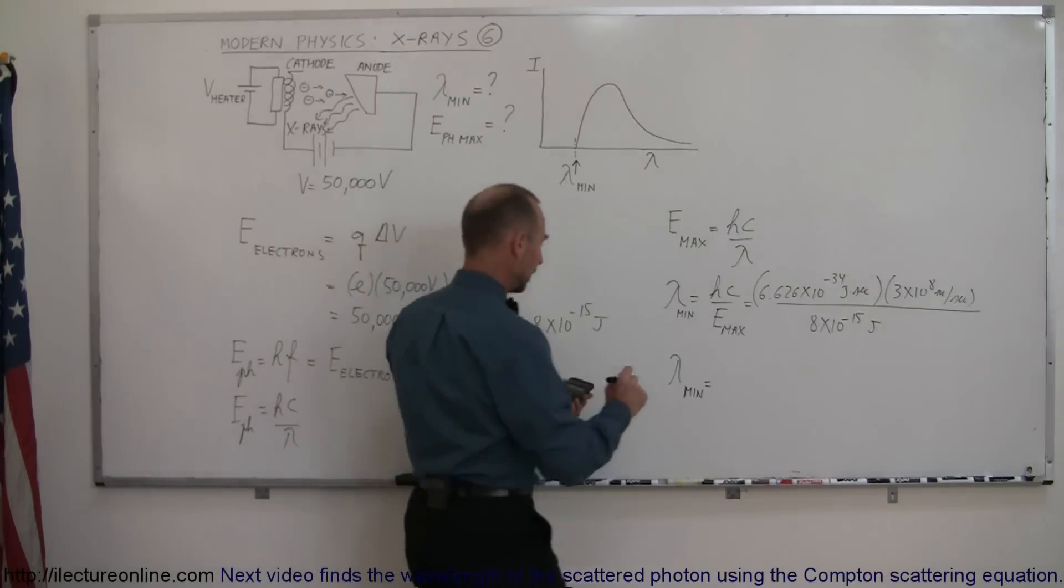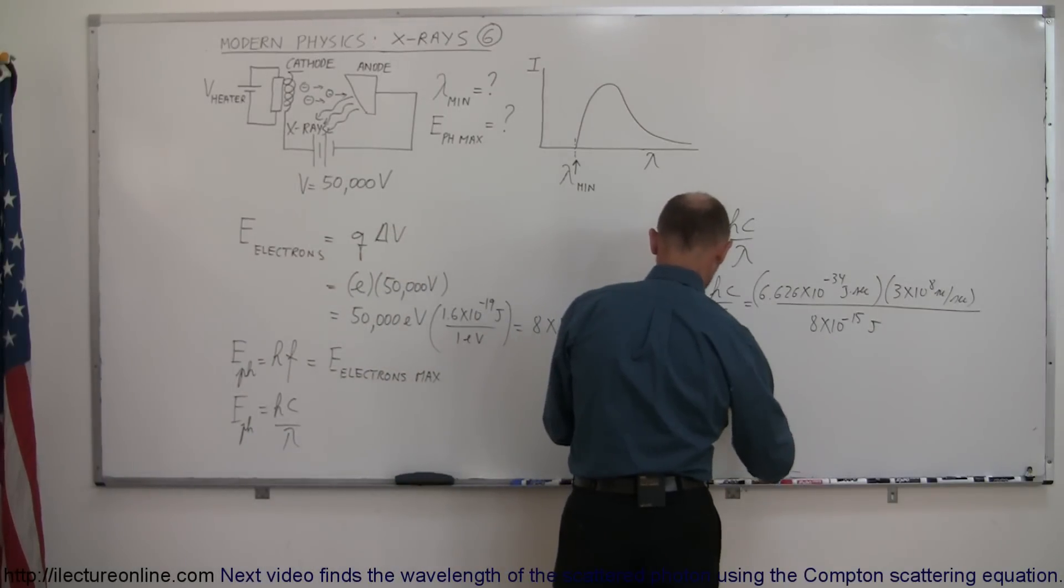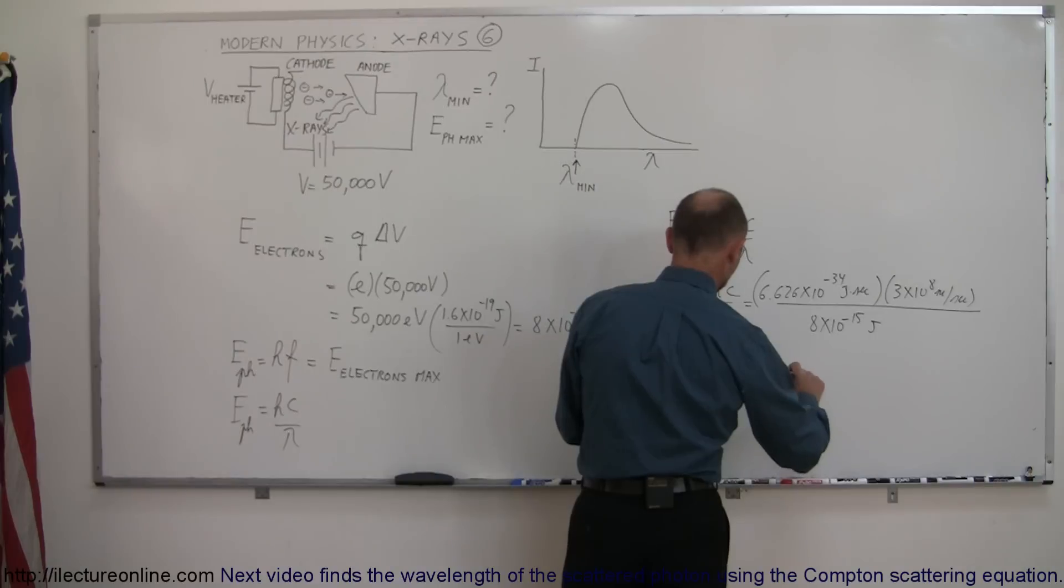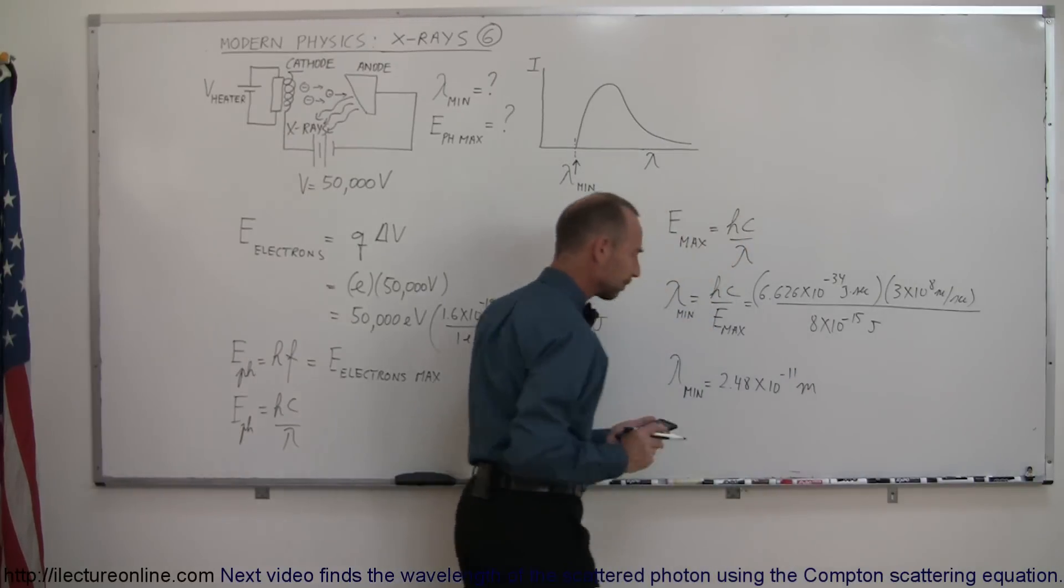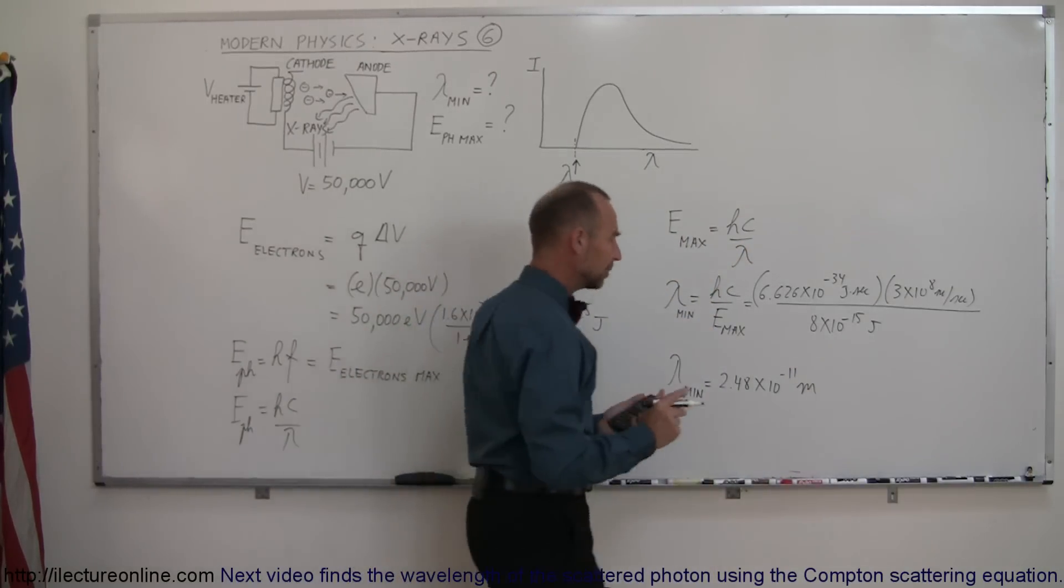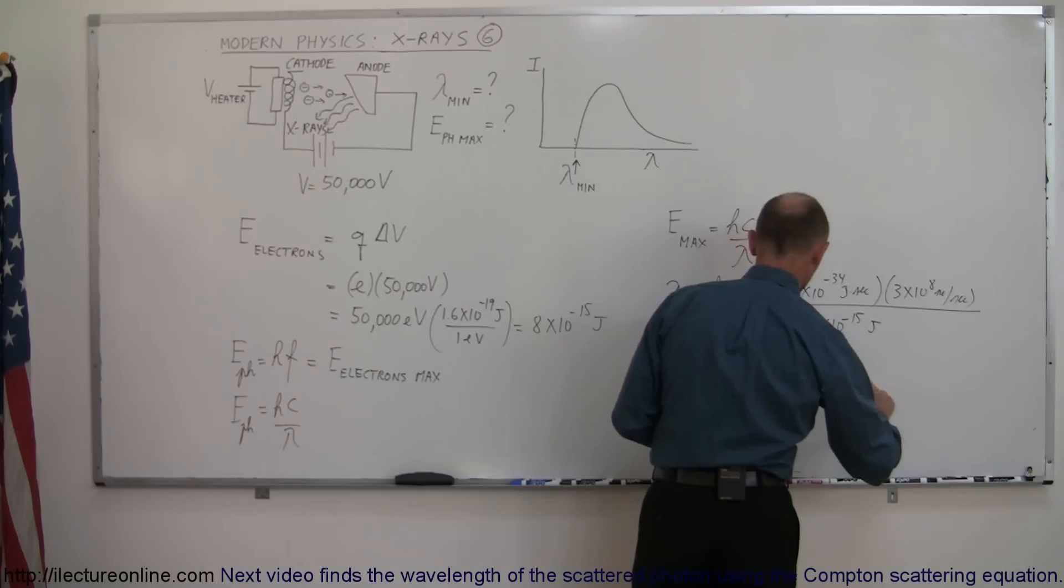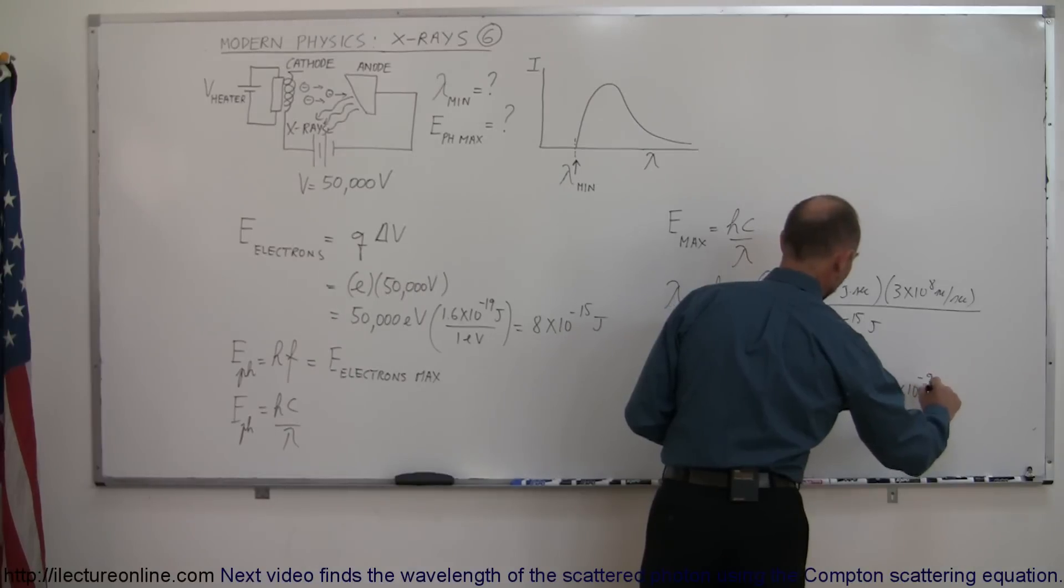And we get the minimum wavelength is 2.48 times 10 to the minus 11 meters. Converting that to nanometers, that would be equal to 0.0248 times 10 to the minus 9 meters.